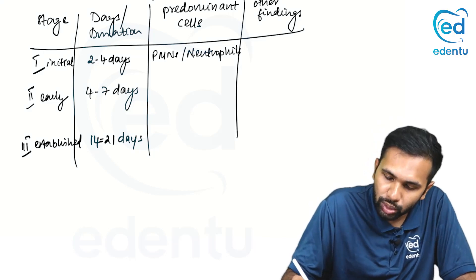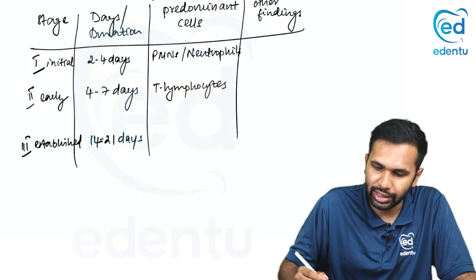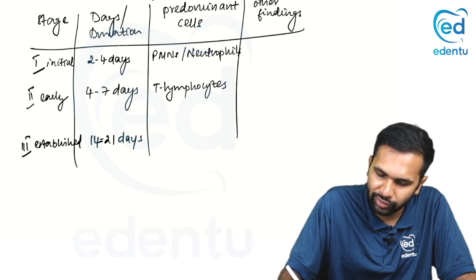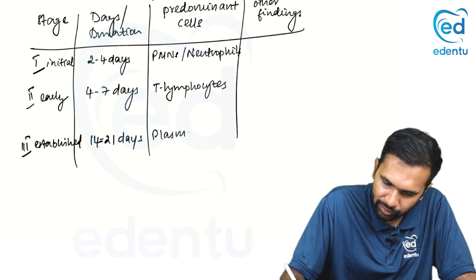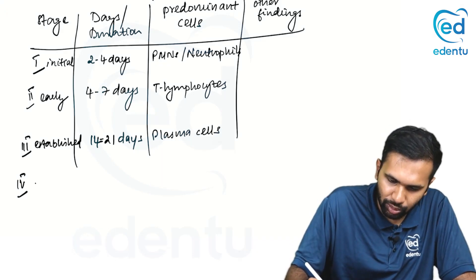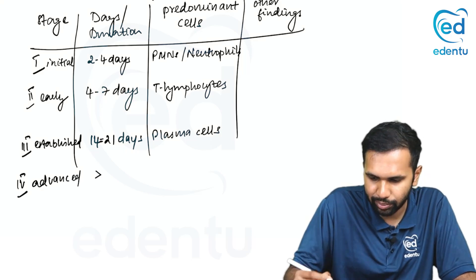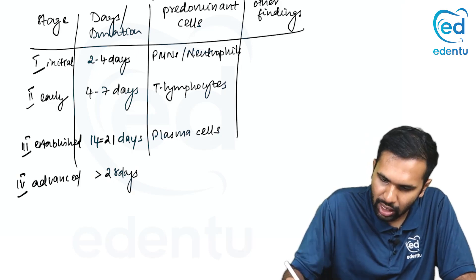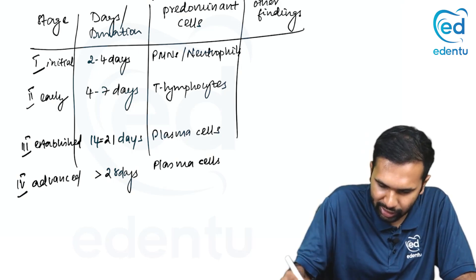In stage 2, you have your T lymphocytes. In stage 3, you have your B lymphocytes, also referred to as plasma cells. Stage 4 is your advanced lesion — it is beyond, let us say, around 25 to 28 days. Again, the predominant cells are your plasma cells.